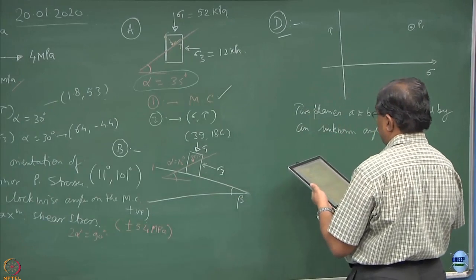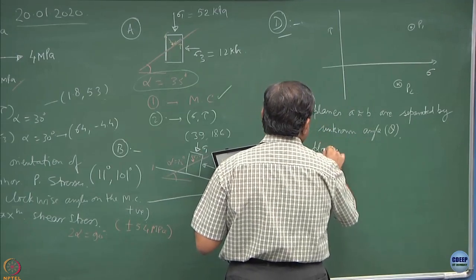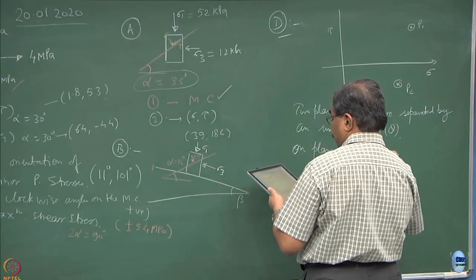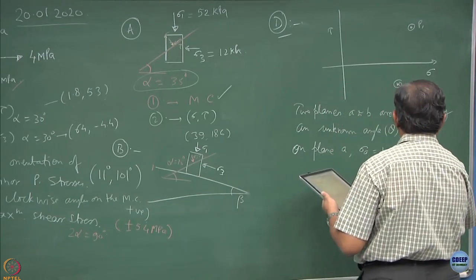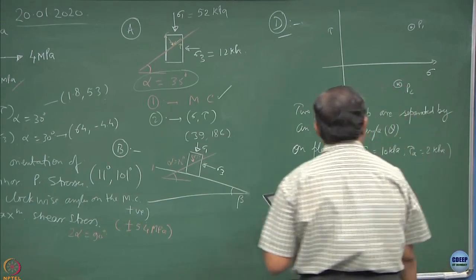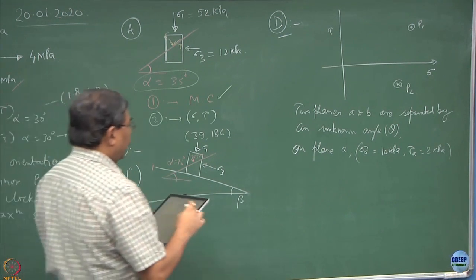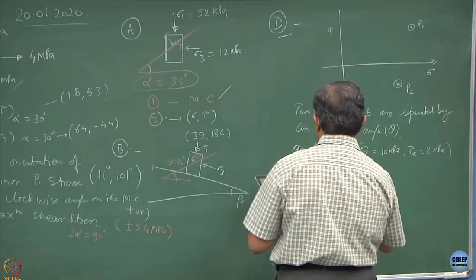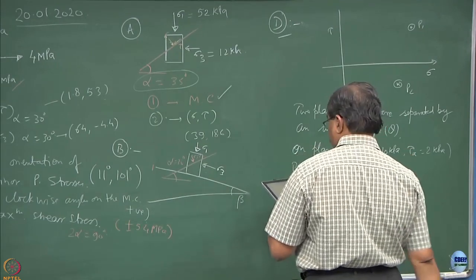Let us say this angle is theta. On plane A, the state of stress is sigma A equal to 10 kPa and this is 2 kPa - kPa is kilopascal. 100 kilopascal is 1 kg per centimeter square. Plane A lies 15 degrees from the horizontal.